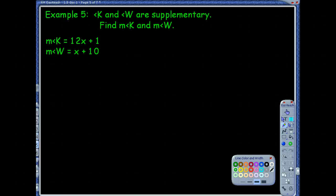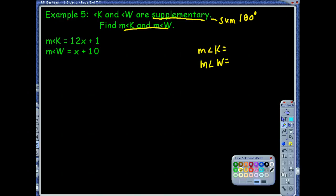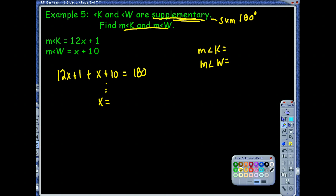Next, it says angle K and angle W are supplementary. Right away I see that word, supplementary. Our sum is 180. We know that we've got to find those two angles. Angle K and angle W are my question marks. Looks like we've got some algebra going here because we've got those variables. Since they don't know either one, but we do know, together they equal 180. Together meaning you have to add them. So we're going to add up angle K, which is 12x plus 1, add that to angle W, which is x plus 10, and it's set equal to 180 because of that keyword supplementary. You do a little bit of your algebra, x should equal 13.